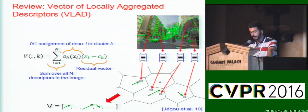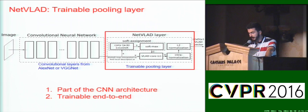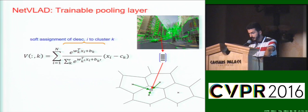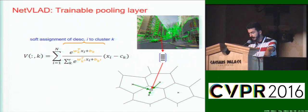While VLAD works very well as a pooling method, in its current form it is not part of a CNN architecture and it is not trainable. In this work, we introduce a new form of trainable pooling layer, which we call NetVLAD, which will be trainable in an end-to-end manner as part of the CNN architecture. To accomplish this, we need to make NetVLAD computation differentiable, and the 0-1 assignment variables a_k are problematic as they make the assignment operation non-differentiable. Therefore, we replace the hard assignment with soft assignment. We show that soft assignment can be accomplished simply by performing softmax over linearly transformed input descriptors, and we are now able to learn better assignment variables w and b depending on the supervised training data.